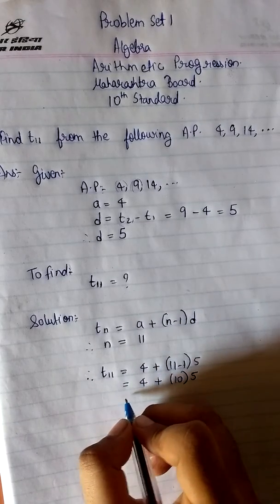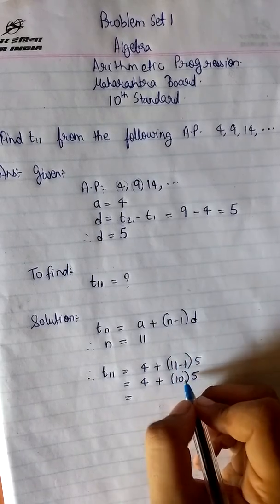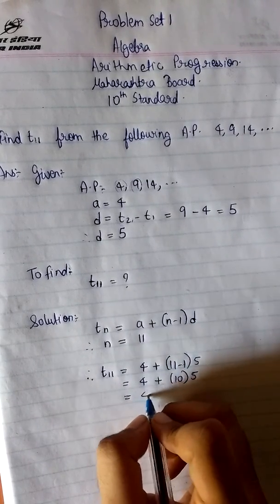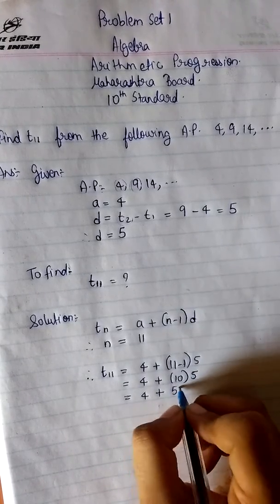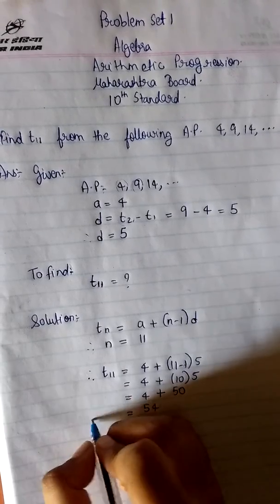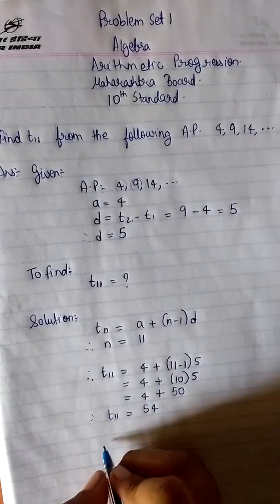So that will be 4 plus 10 into 5. I am following the BODMAS rule here. So first I will solve the brackets and then I will open the brackets. First I will solve multiplication. That will be 4 plus 10 into 5 that is 50. And then 4 plus 50 that is 54. Therefore we got the value of T11 as 54.